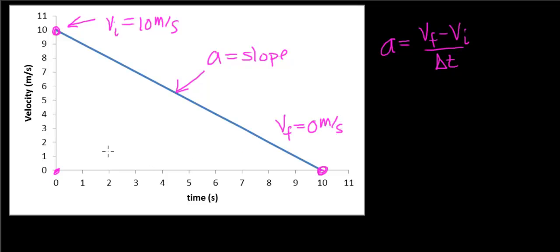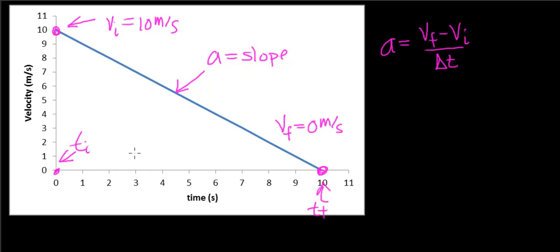The time it takes to go from 10 meters per second to zero meters per second is 10 seconds. So if this is my initial time, then my final time is this point, and delta t in this case is going to be 10 seconds.